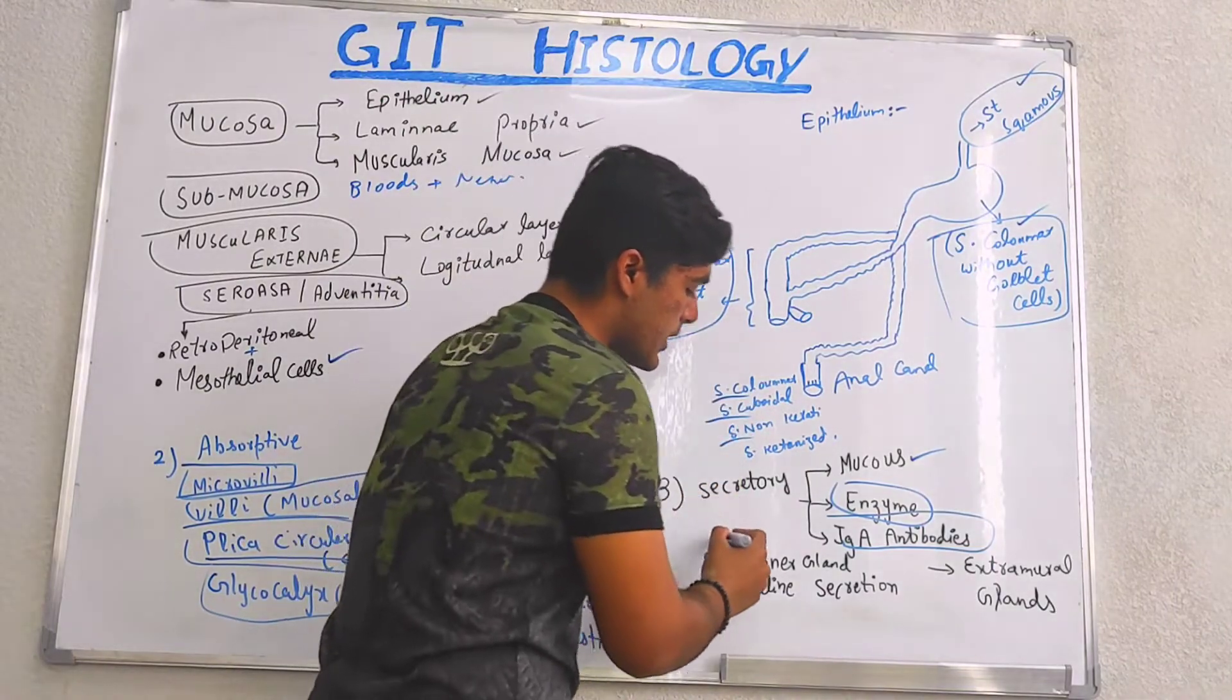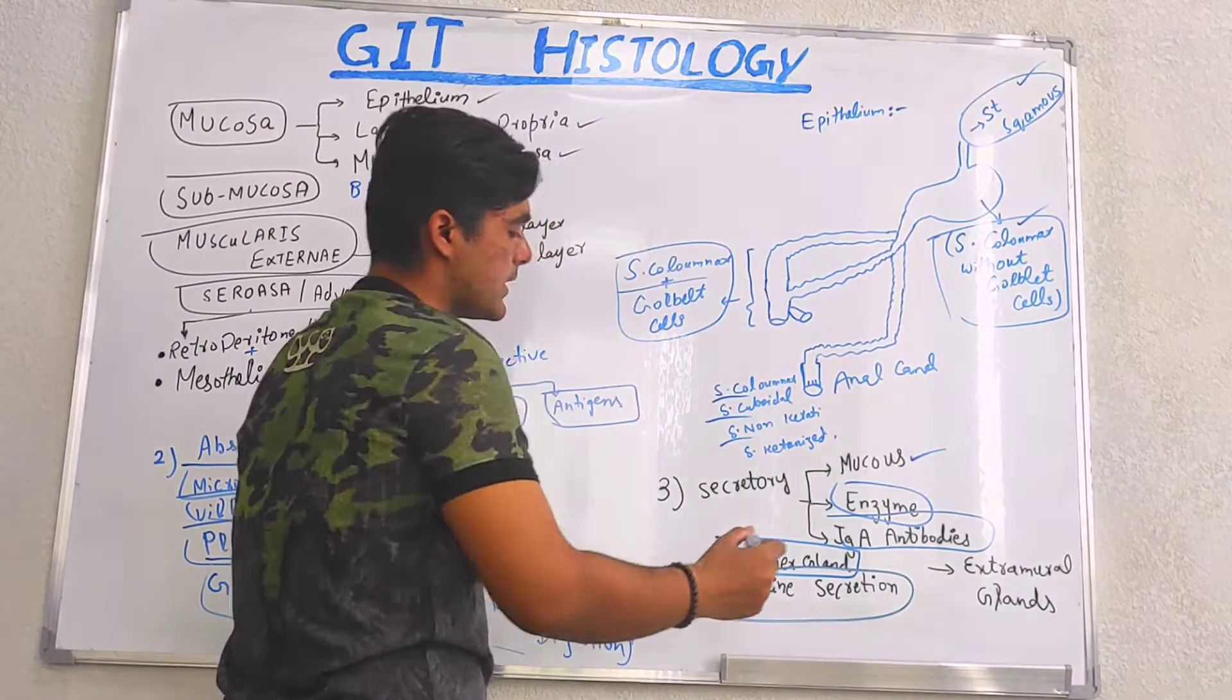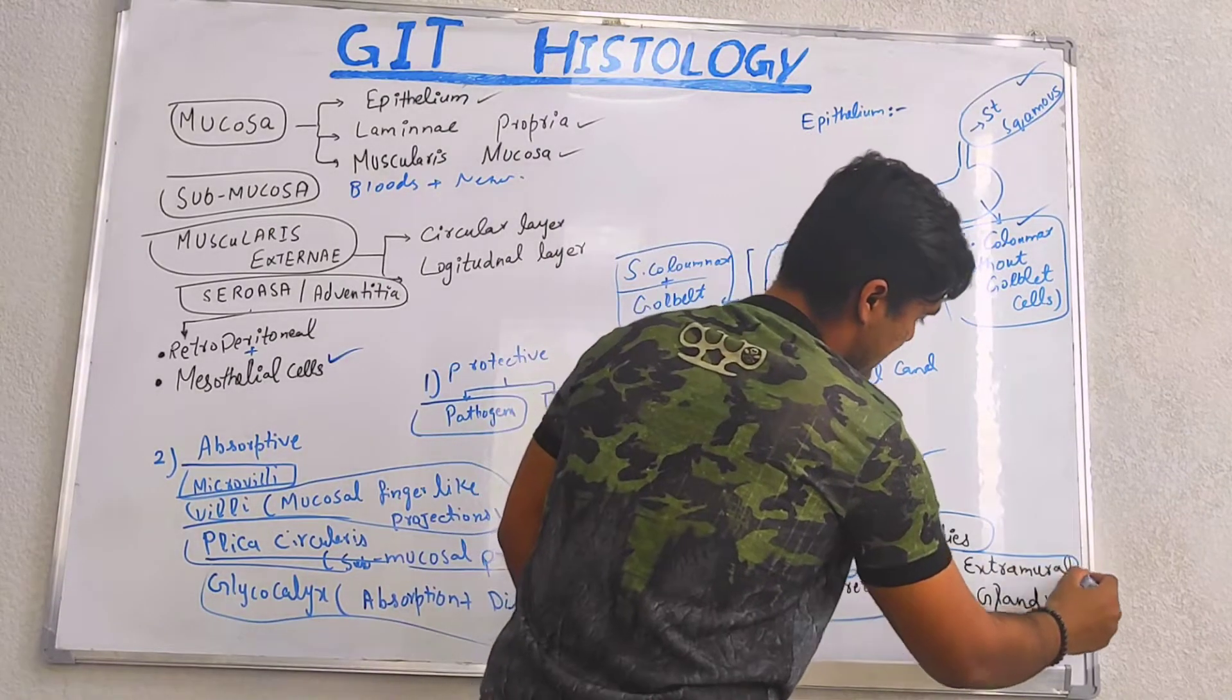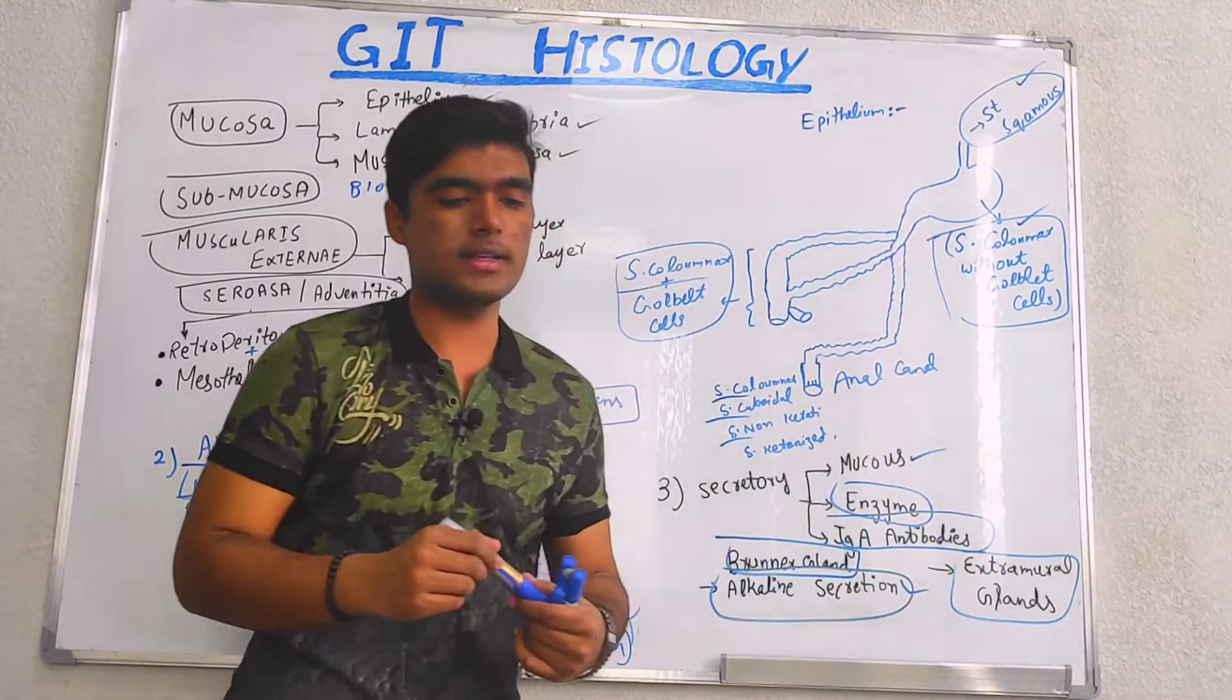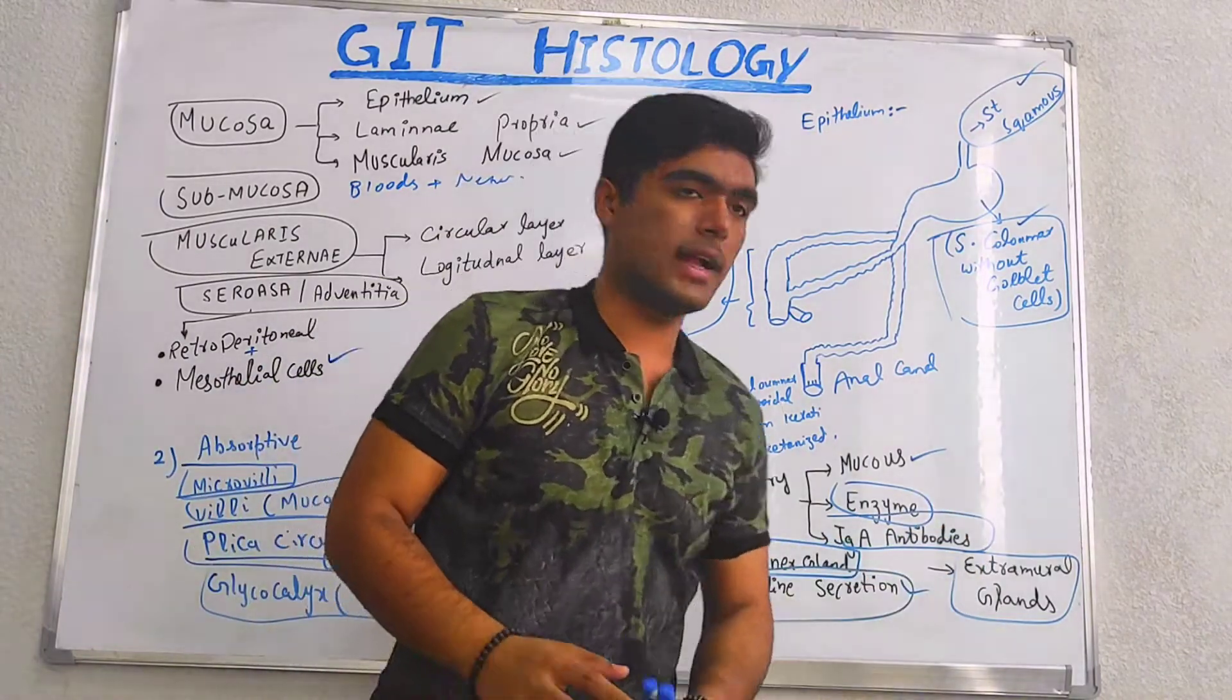We also have glands. We name them as Brunner's gland which are playing role in alkaline secretion, and extramural glands which are basically present extracellularly.